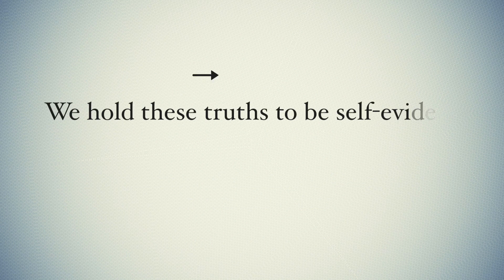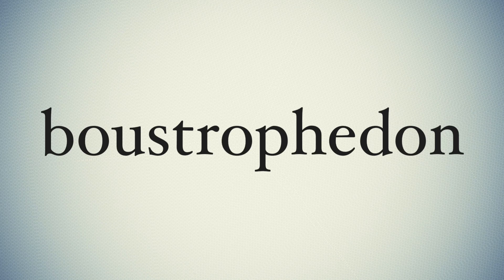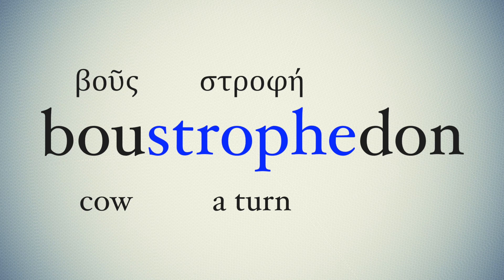Many languages like English or French are written left to right, while others like Hebrew and Arabic are written right to left. But there's a third option — a combination of the two — that was experimented with as early civilizations first developed their writing systems. That's called the boustrophedon. Literally, 'bous' is Greek for cow, 'strophe' is a turn, and 'don' means like.